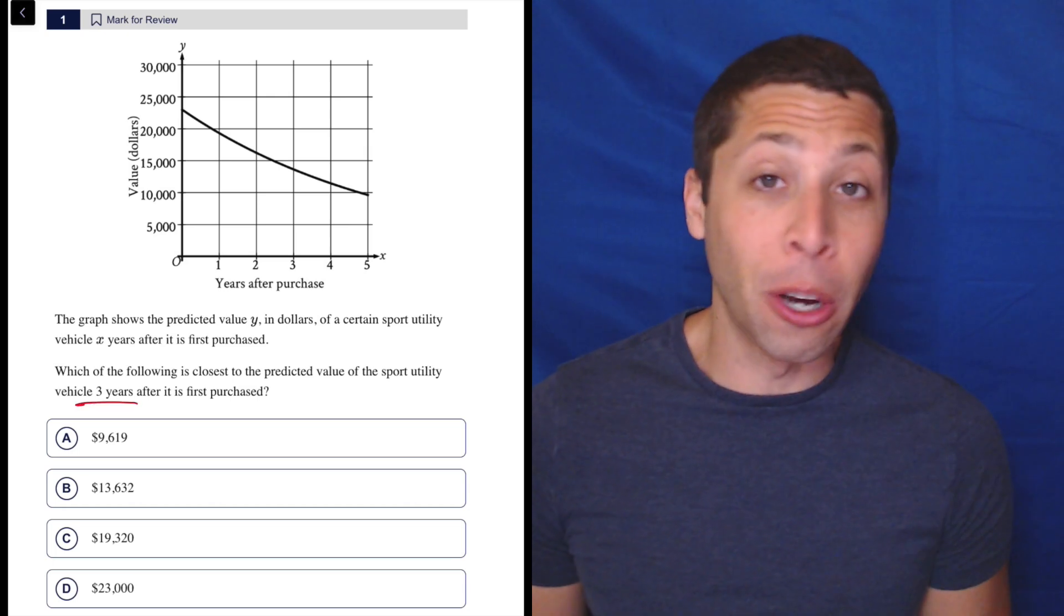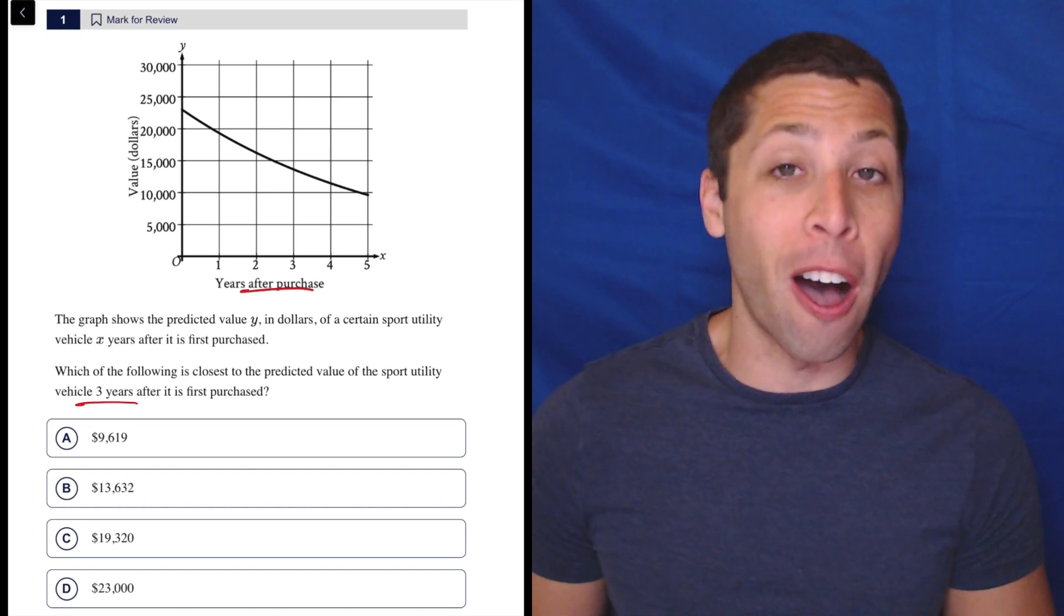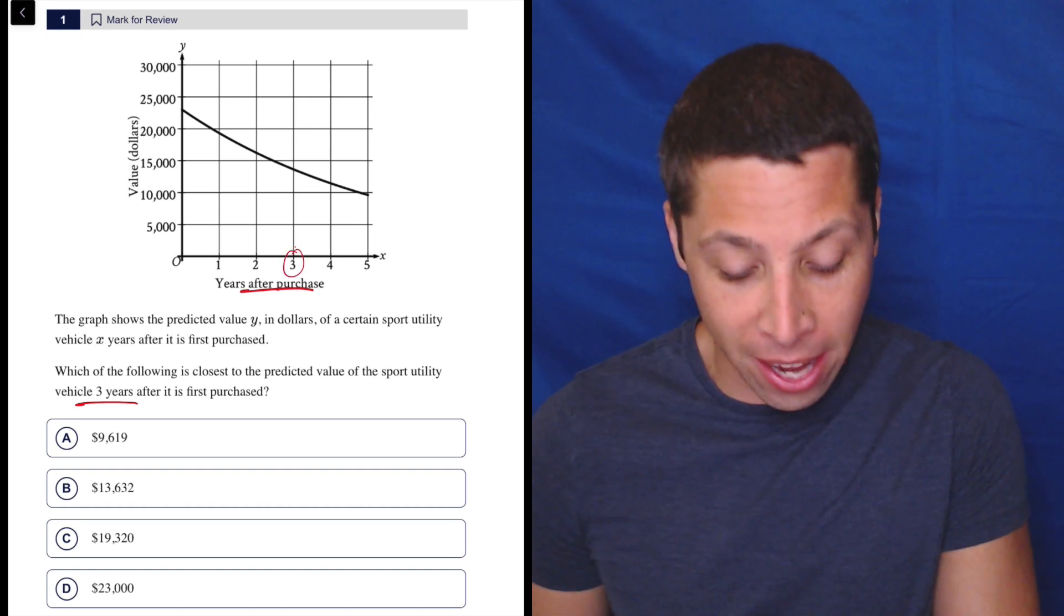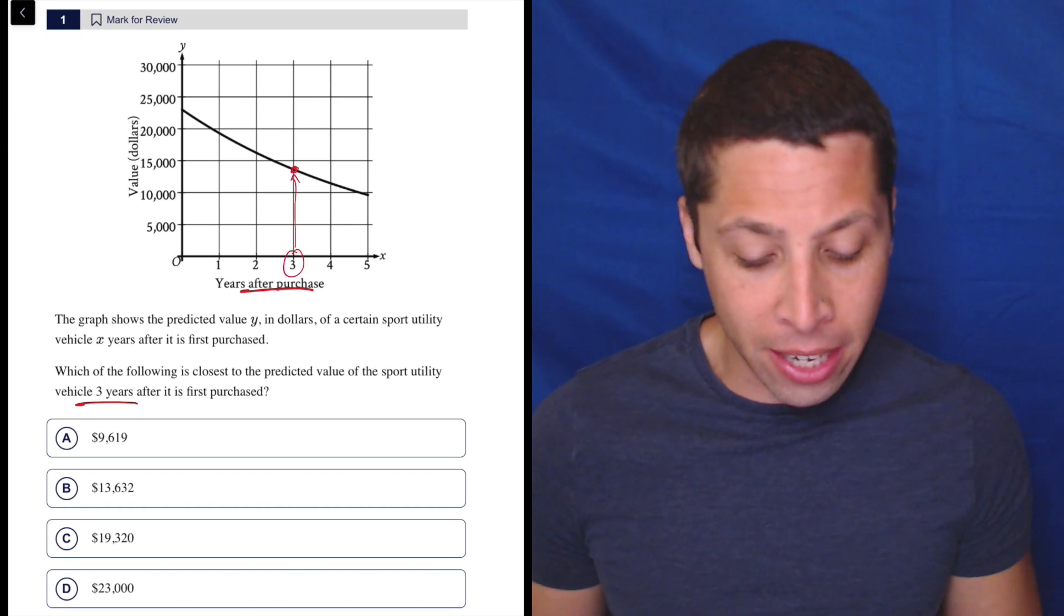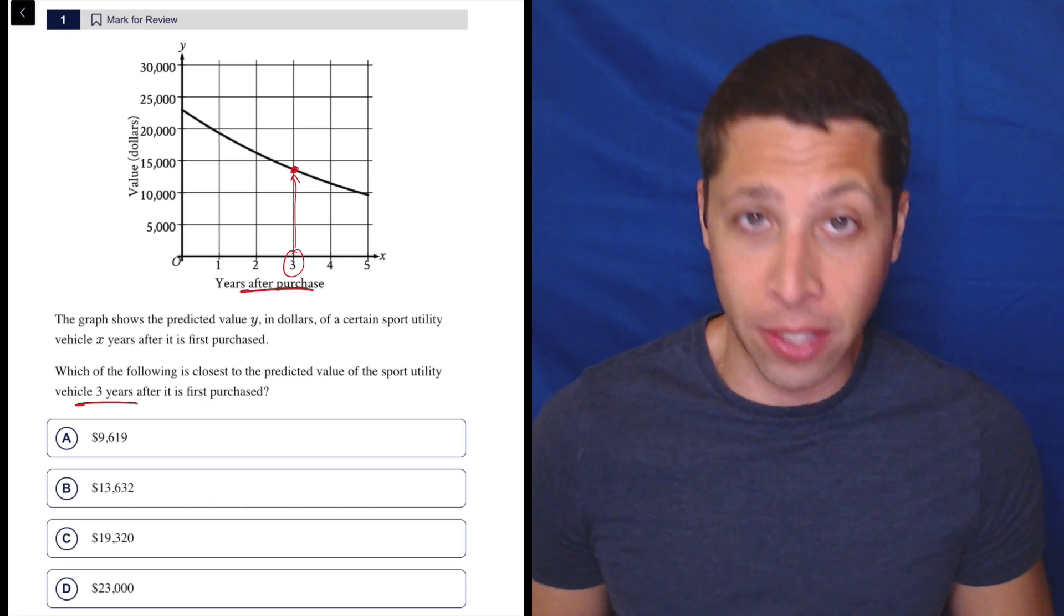So that just means go to three years after purchase on the x-axis, right? So here's that. Go up. Where does it hit the line? Well, somewhere between 10,000 and 15,000.